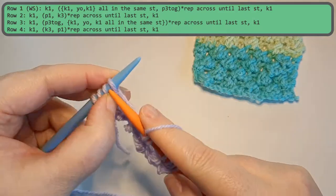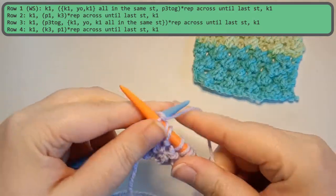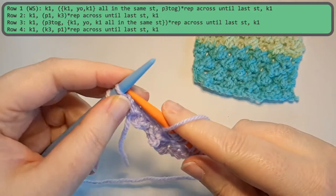Now you want to make sure that your yarn over doesn't get stuck or twisted. So just kind of take your time when looking at that from the previous row.